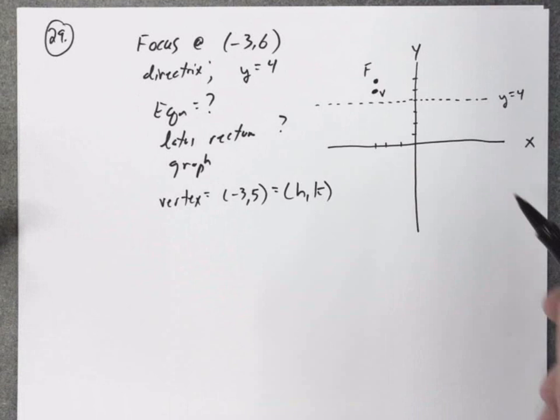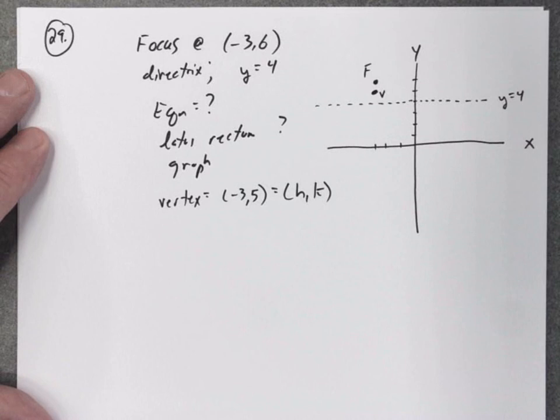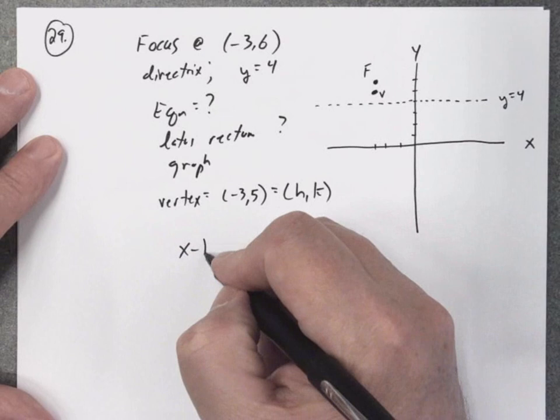So now it's pretty obvious that this is going to be a parabola that opens up. Since it's a parabola that opens up, you can go to your formula sheet. Now you have to know, there's two equations, and you have to know that the parabola that opens up, this is the standard equation.